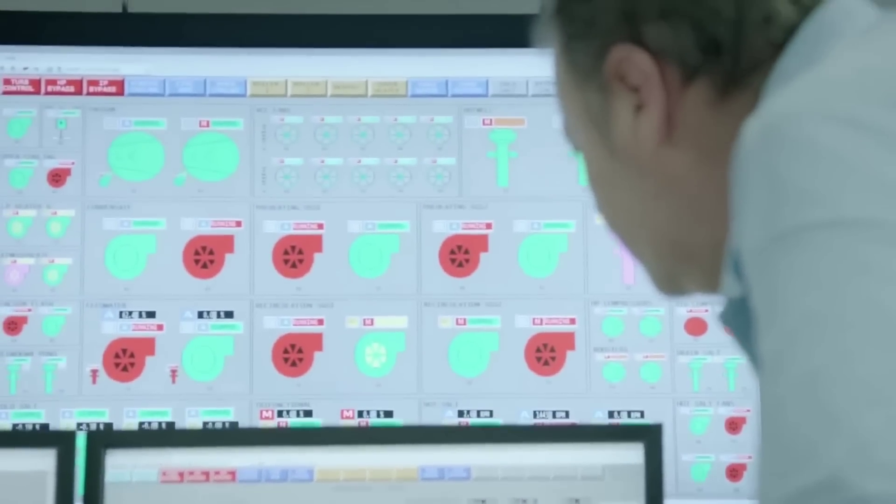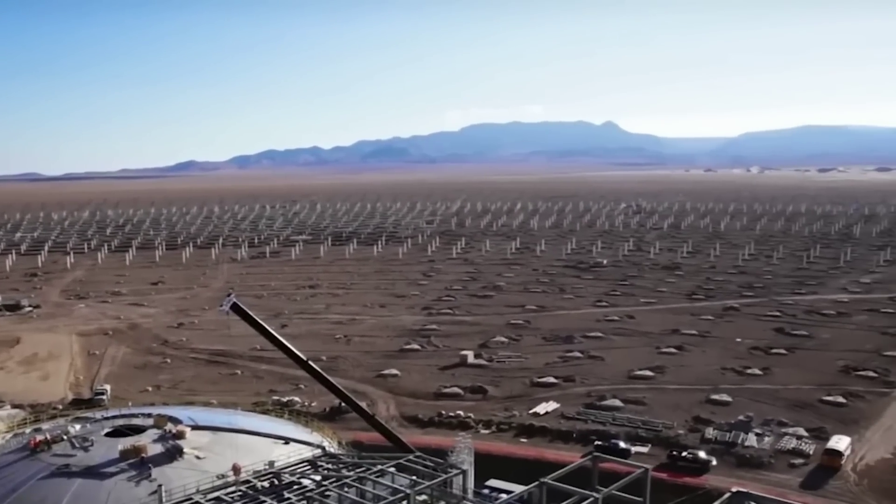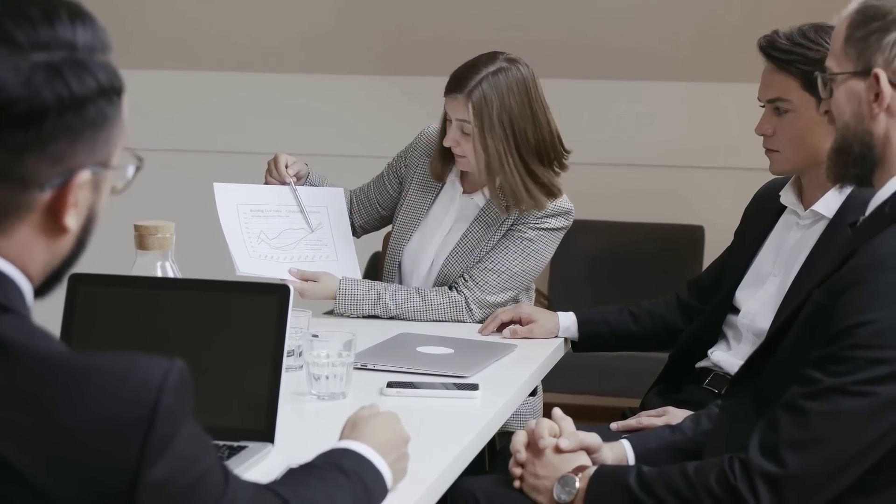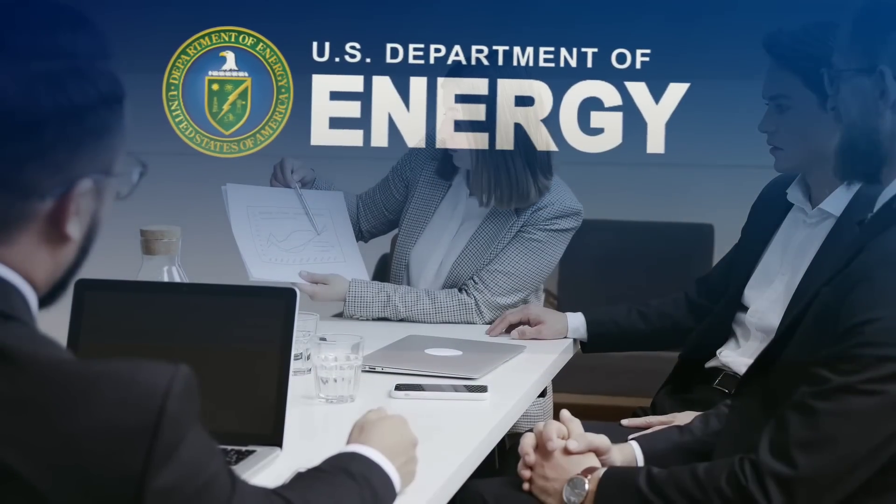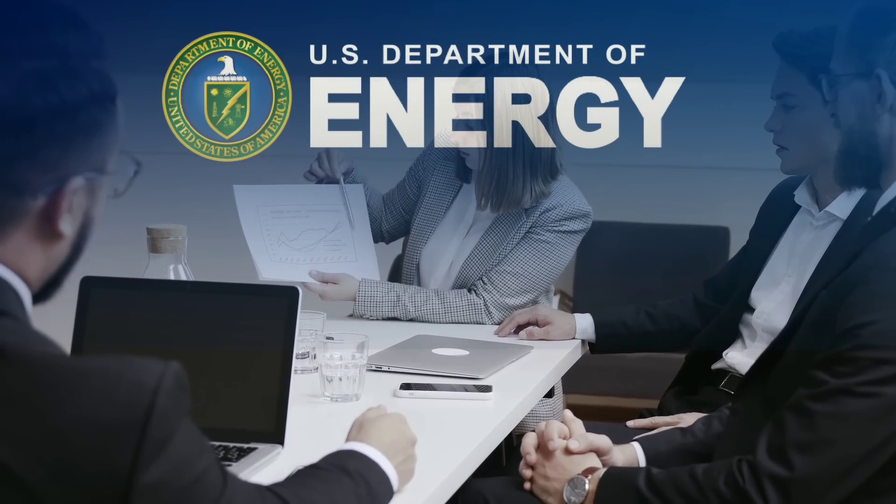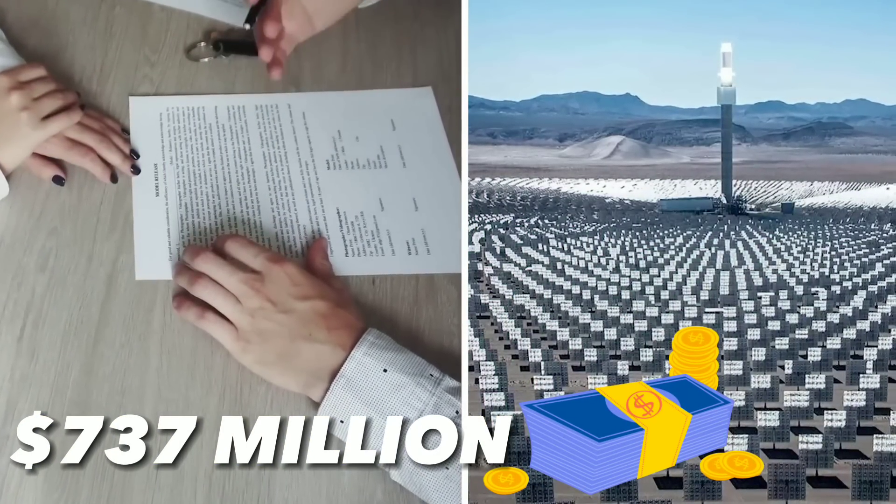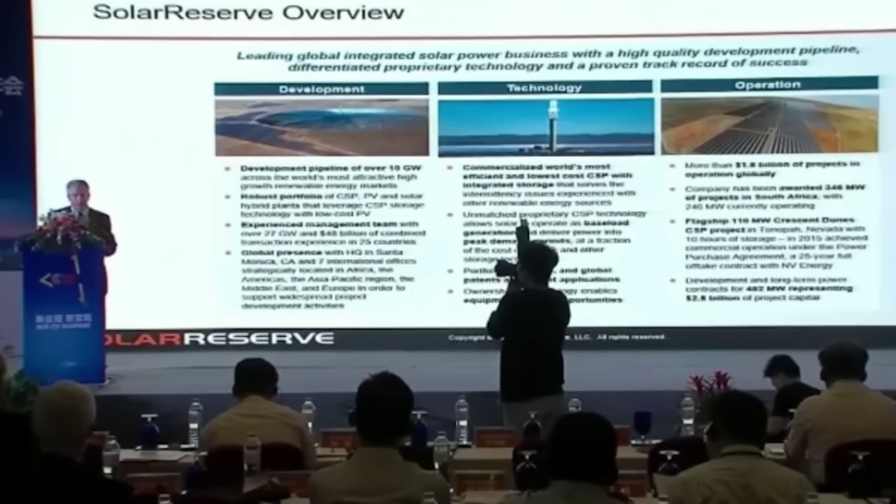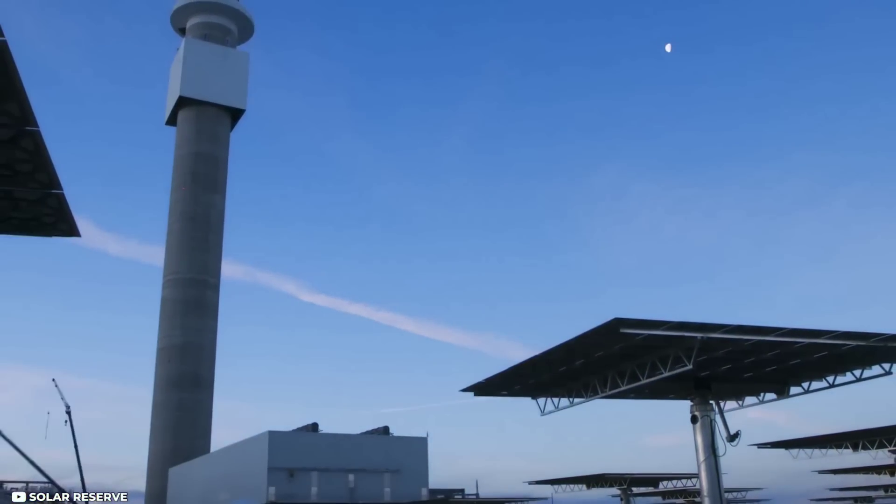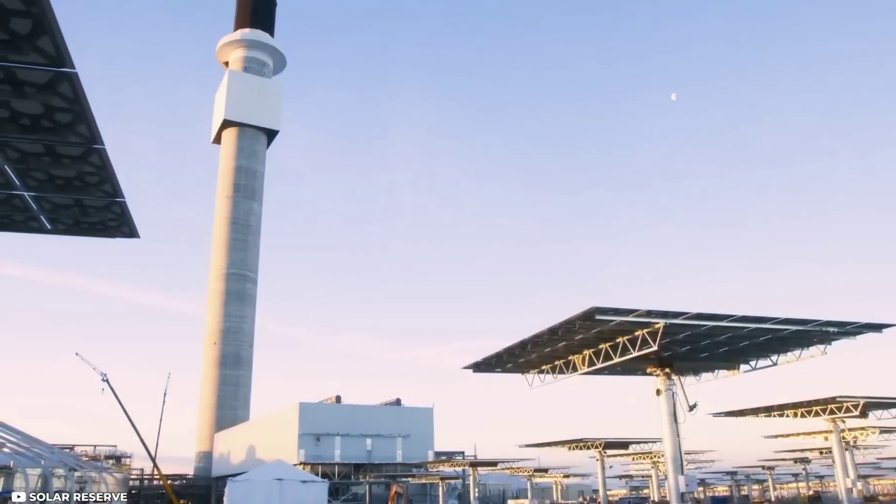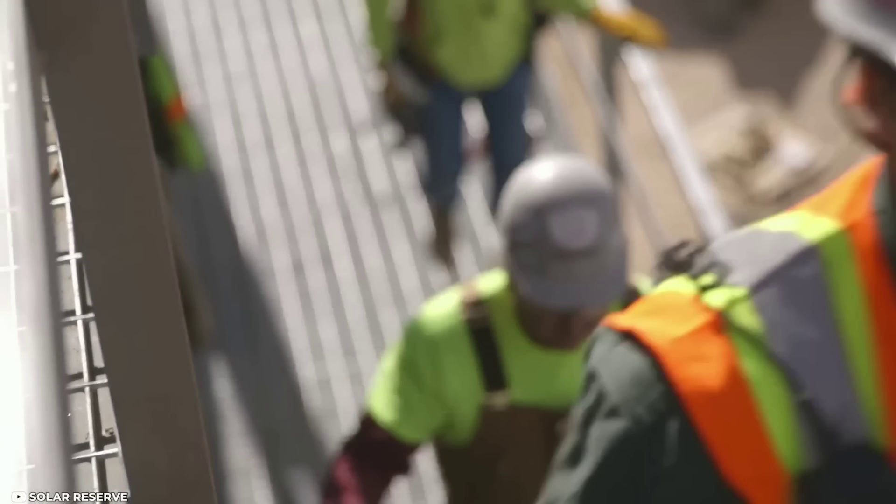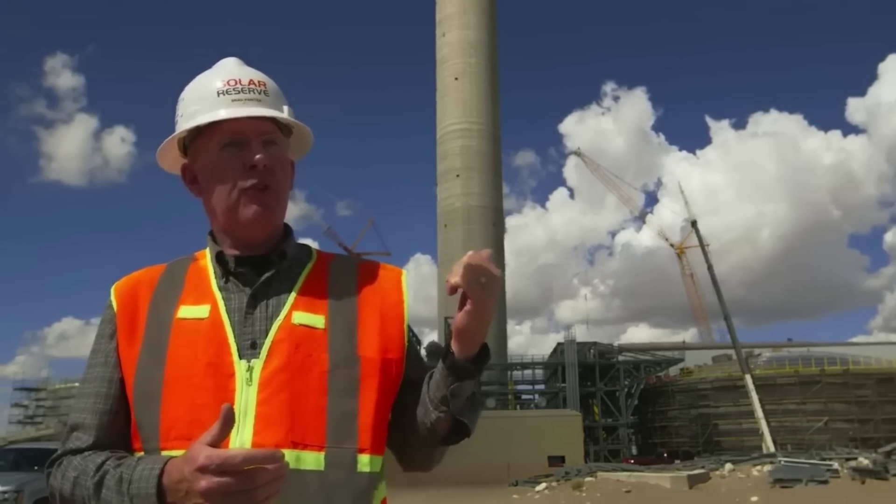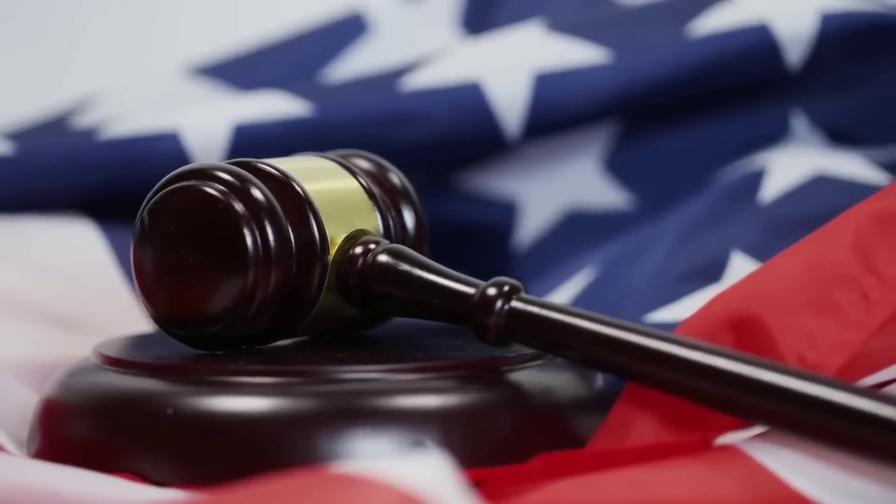But in the end, Solar Reserve filed for bankruptcy, blaming the Department of Energy. The Department of Energy had lent $737 million to the project and had the right to take over the plant if it defaulted on its payments. Solar Reserve claimed that the Department of Energy violated its agreement and took control of the plant's owner, Tonopah Solar, by appointing new directors to its board. Solar Reserve said that this prevented it from having a say in the plant's decisions, such as filing for bankruptcy.